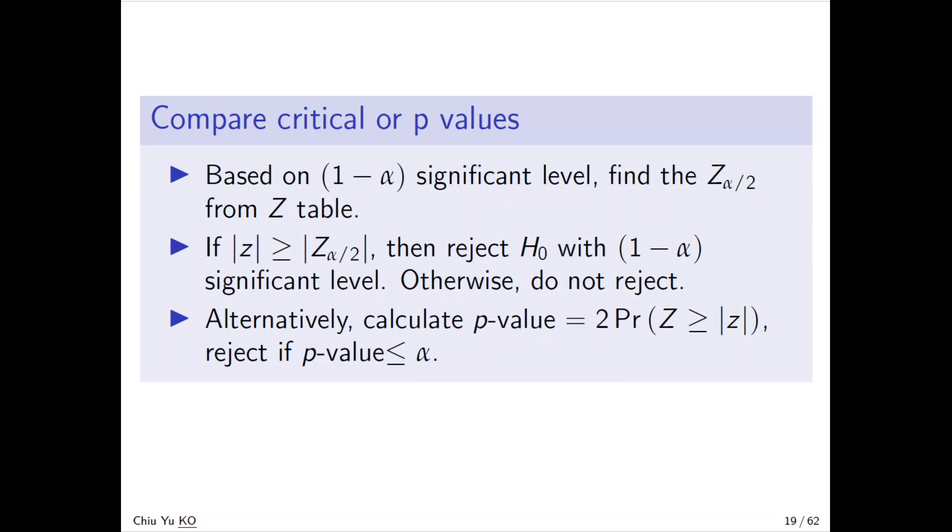And also for the p-value, you look at Z is bigger than the absolute value of z. How extreme, more than that, both sides. Because it's symmetric around zero, that is easiest. And you reject if the p-value is less than alpha.